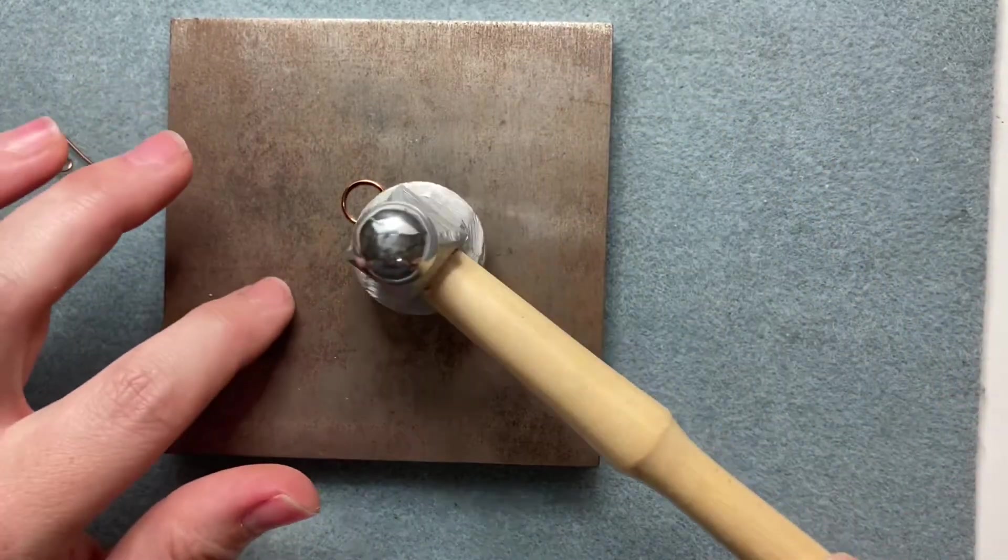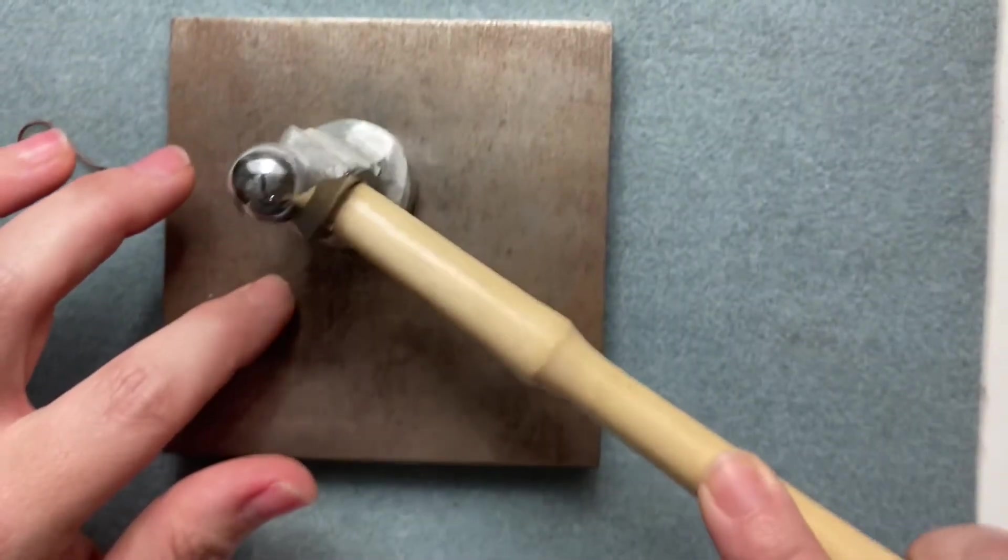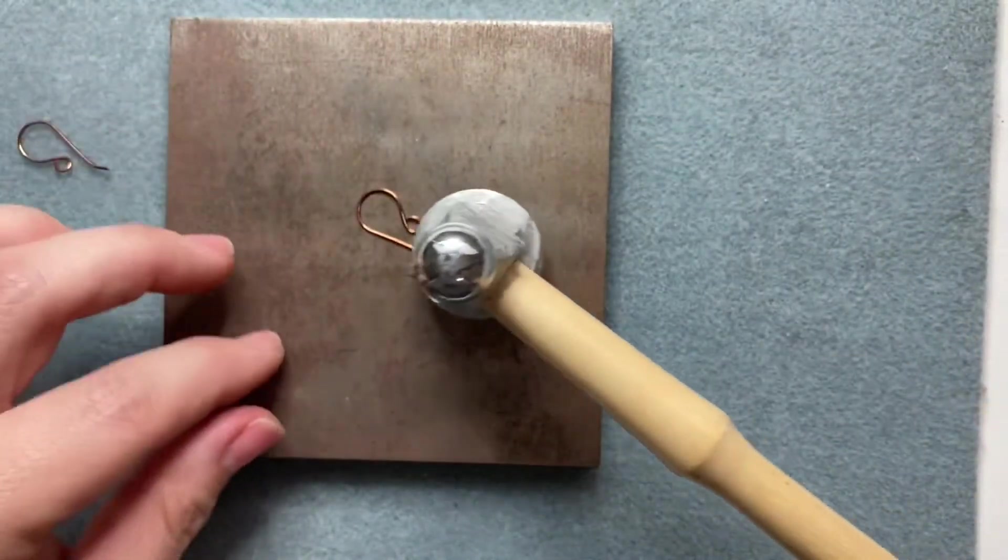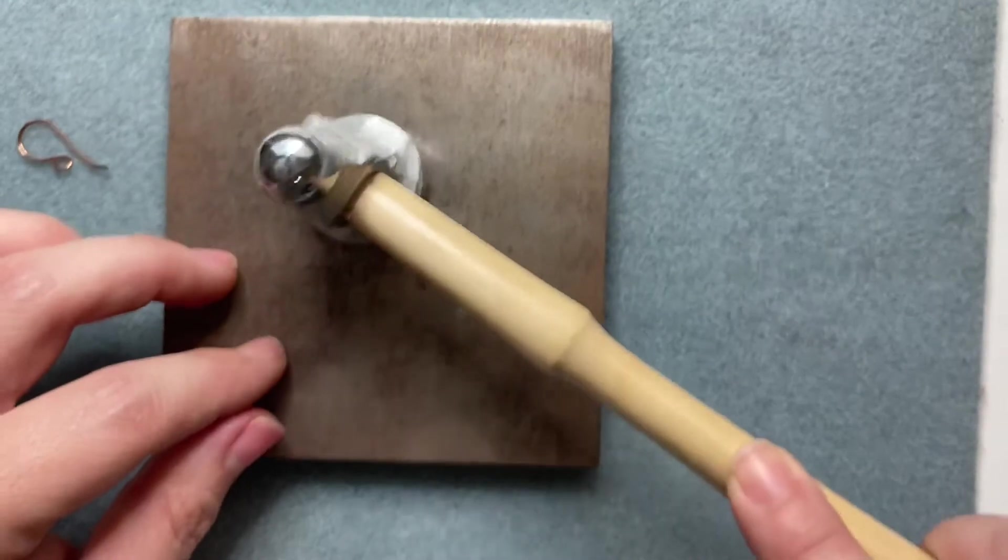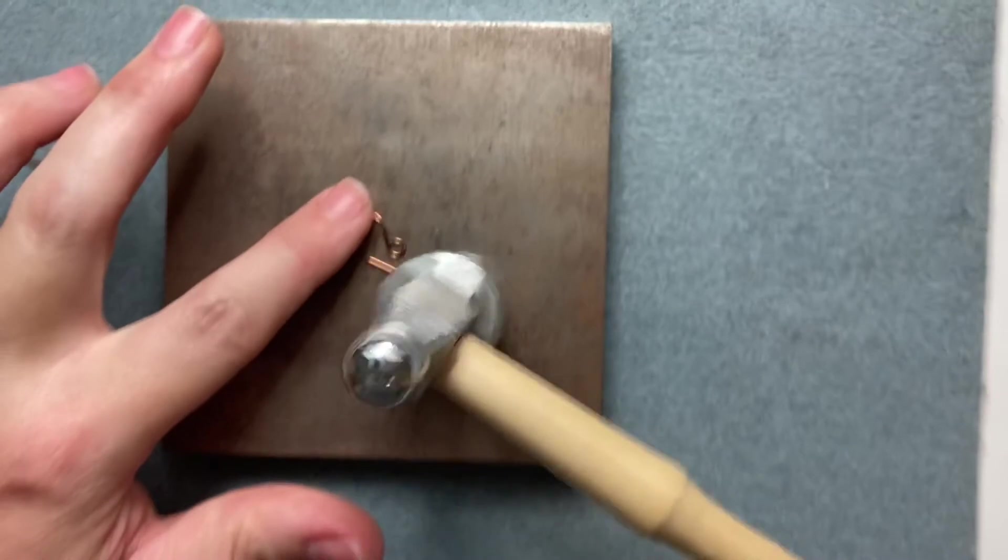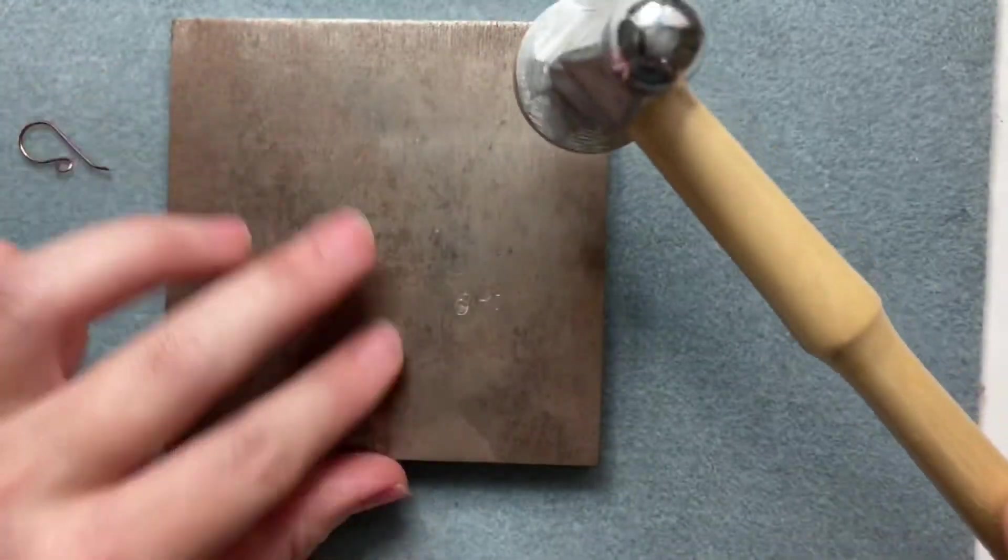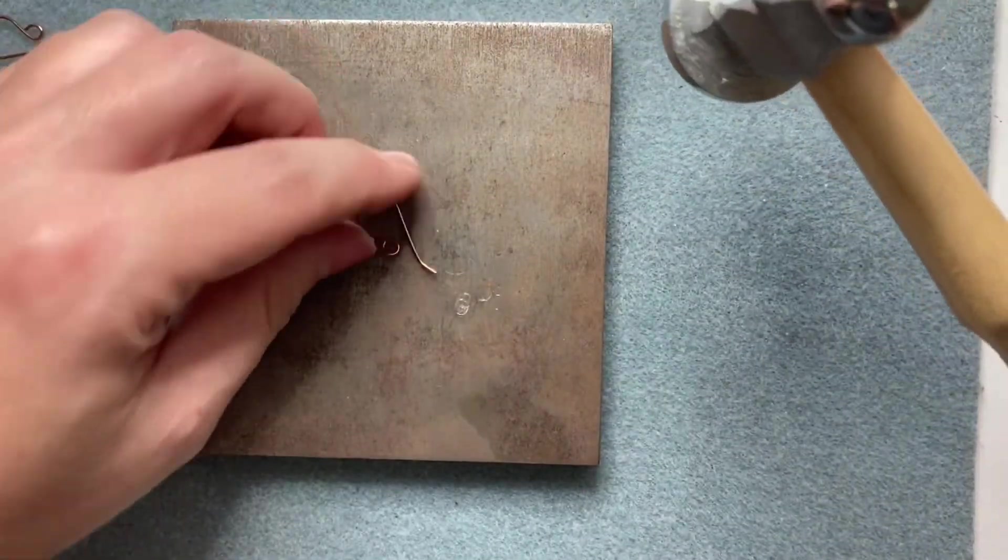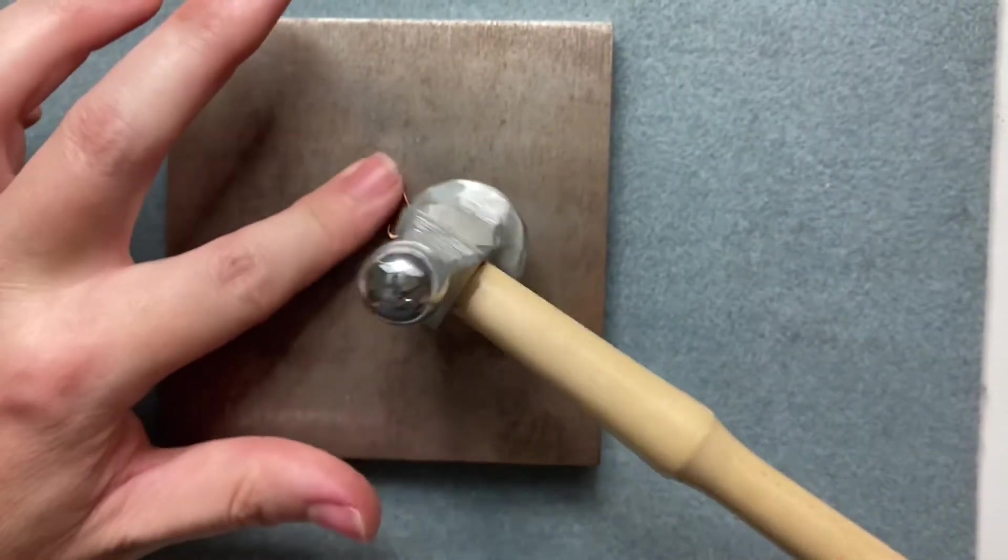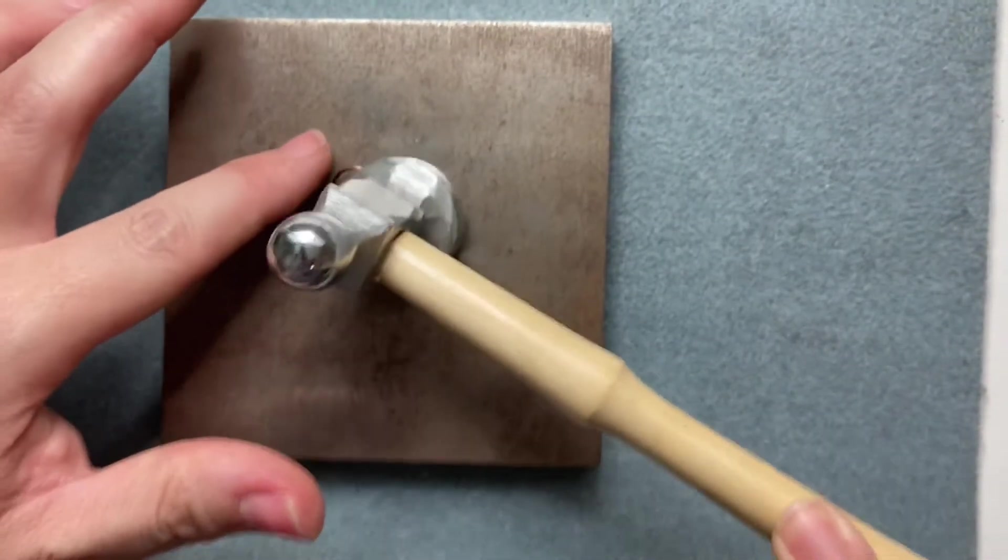Like so, just a little bit of a tap. Flip it over, another little tap, and it just allows the earring to lay flat. And then you do it with the other side. You can hold it with your finger if you want.